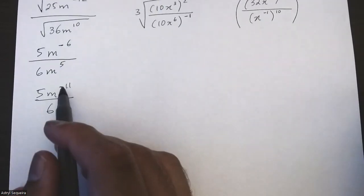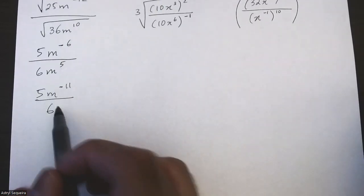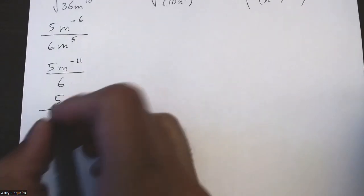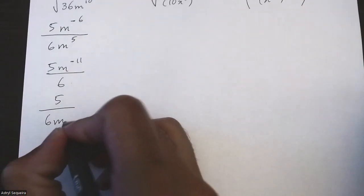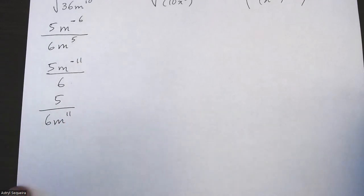Then I just want to make sure my exponent is positive, so I'm only going to move the m to the bottom. So my final solution is 5 over 6m to the exponent of 11.